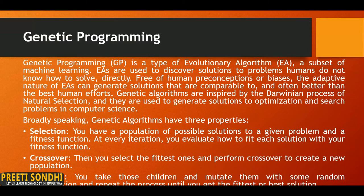Genetic programming is used to discover solutions to problems that humans don't know how to solve directly — generating solutions that may be outside our normal perceptions. In layman's terms, it is a technique used to create algorithms that can program themselves. Instead of programming a model to solve a particular problem, genetic programming only provides a general objective and lets the model figure out the details itself. Simply put, it lets the machine automatically test various algorithms and provides you with the best one.